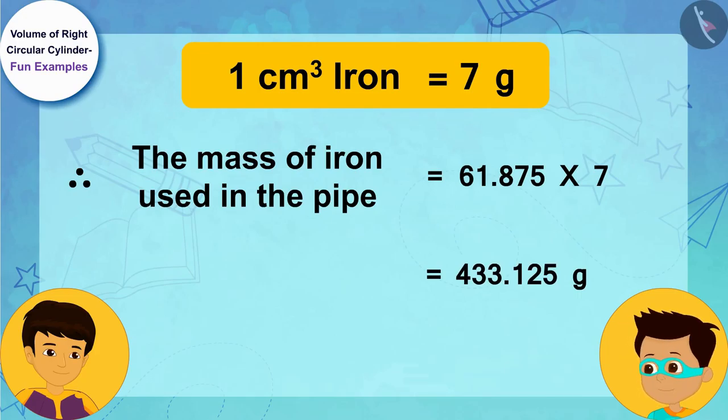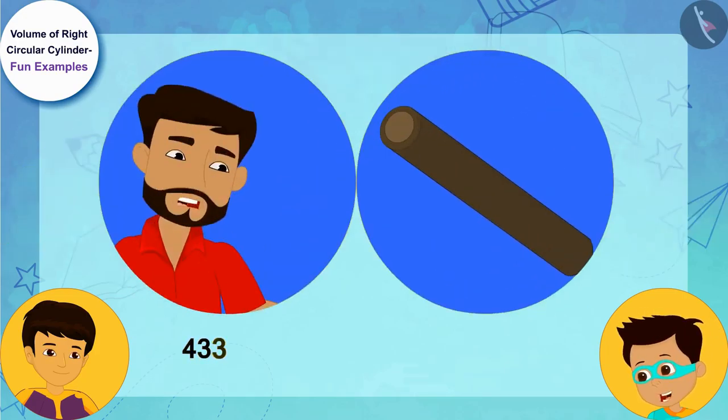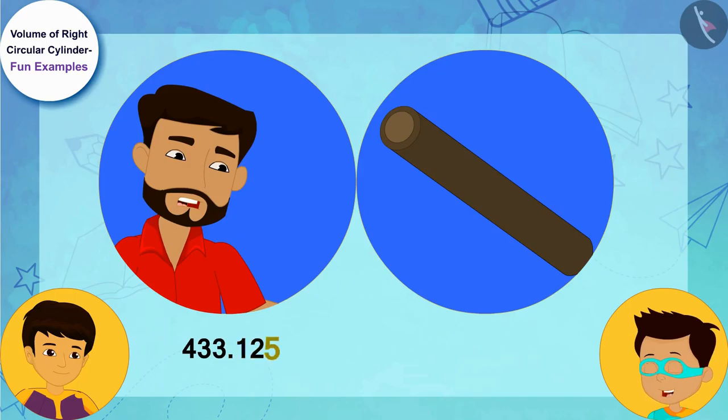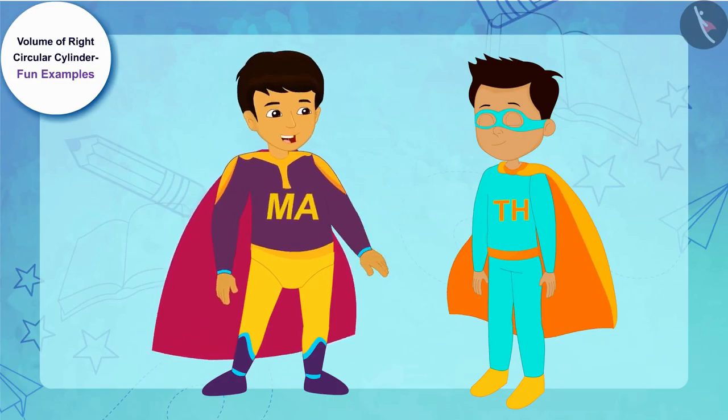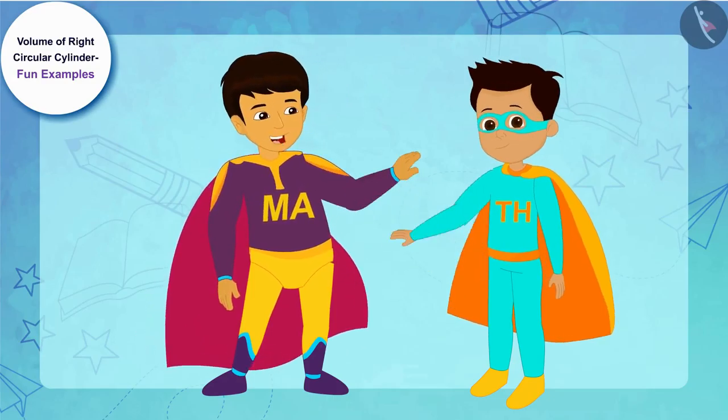Look, Manas. Uncle needs 433.125 grams of iron for the pipe. Haha, come on Thomas, let us quickly return to our world. Uncle will be waiting for us.